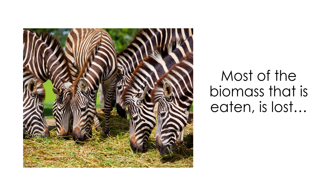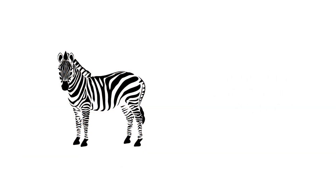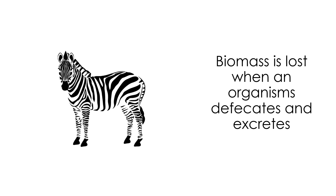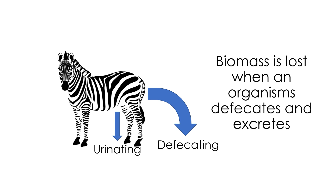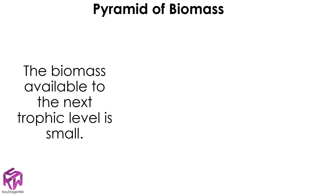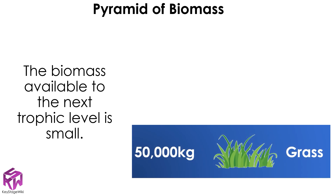An animal may lose biomass by defecating (that means to poo), urinating (that means to wee), or exhaling (that means to breathe out). Scientists show the amount of biomass at each trophic level with a pyramid of biomass. Here we can see that if we have 50,000 kilograms of grass, there will only be 5,000 kilograms of zebra.